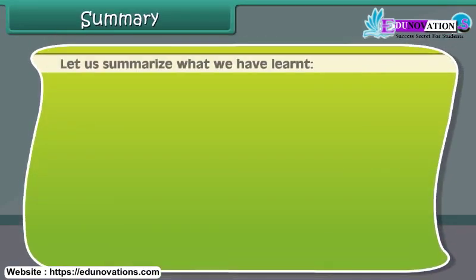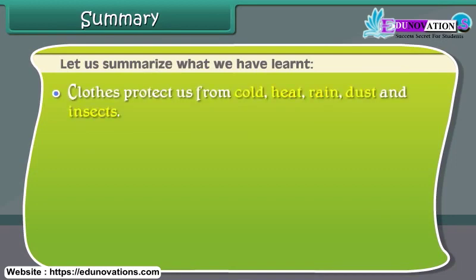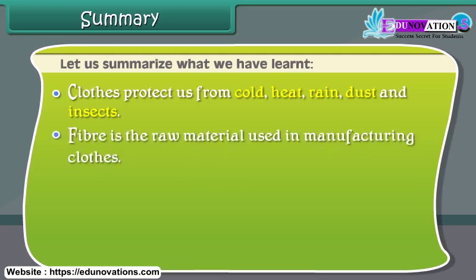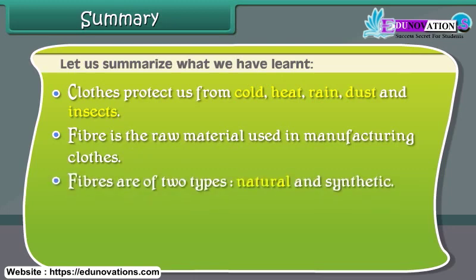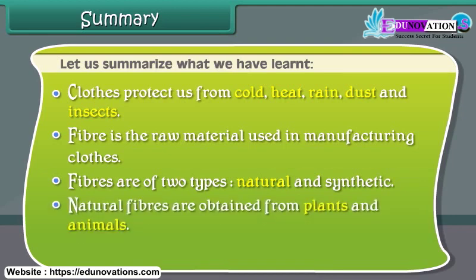Let us summarize what we have learned. Clothes protect us from cold, heat, rain, dust, and insects. Fiber is the raw material used in manufacturing clothes. Fibers are of two types: natural and synthetic. Natural fibers are obtained from plants and animals, while synthetic fibers are man-made.